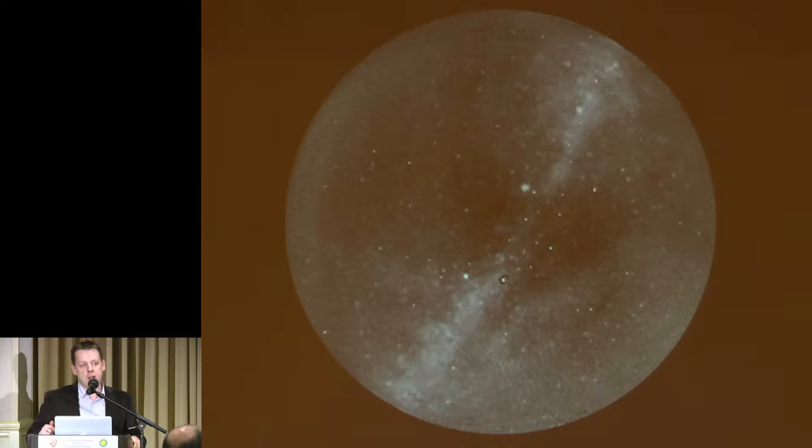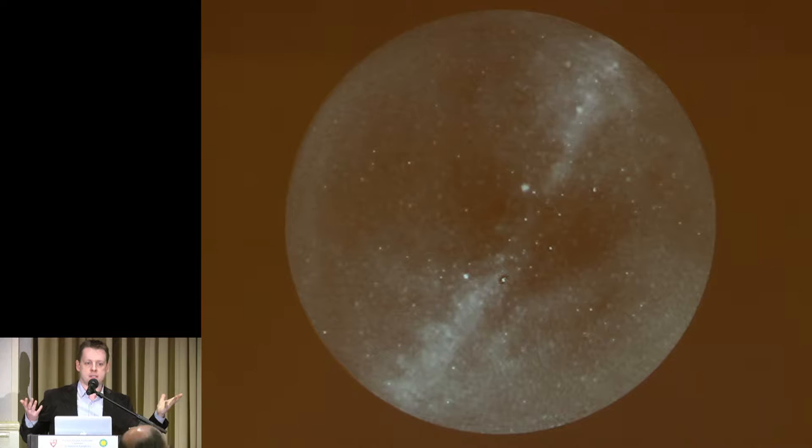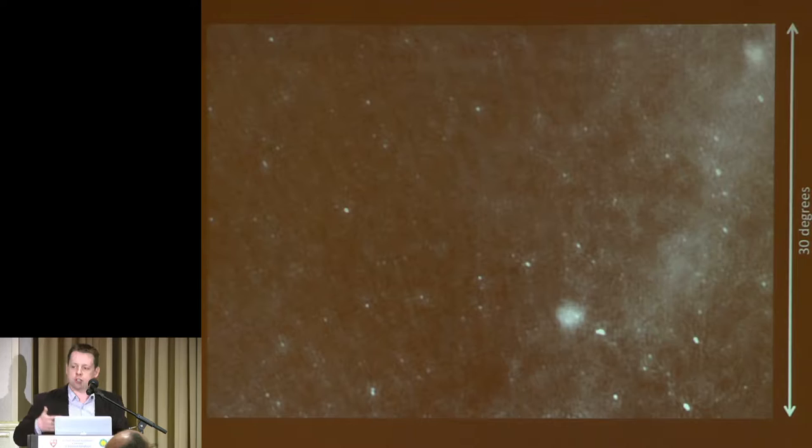There was a VLA survey about 10 years ago at 74 megahertz that surveyed the entire sky at these frequencies — it took about 1,000 hours. In a single 20-second snapshot, we get every single one of those galaxies in the sky. That tells you how progression has allowed us to survey very large fields of view in a very short period of time. Here's a zoomed-in view showing all the AGN, supernova remnants, and diffuse emission.